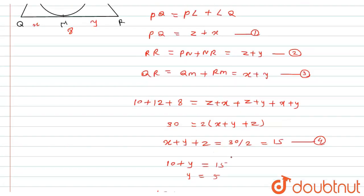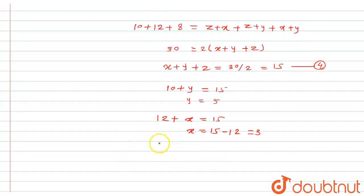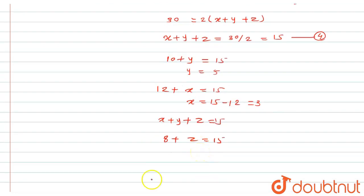Similarly, from equation number 3 and 4, I can put the value X plus Y plus Z equals 15. On the place of X plus Y, I will put the value that is 8 plus Z equals 15. Now here I will get the value of Z equals 15 minus 8 equals 7 cm.